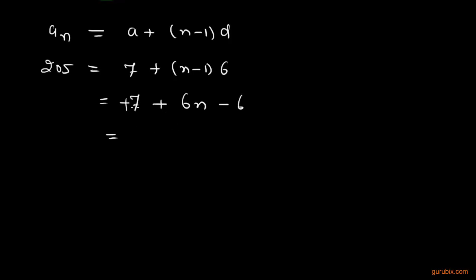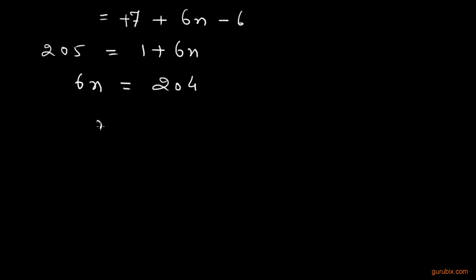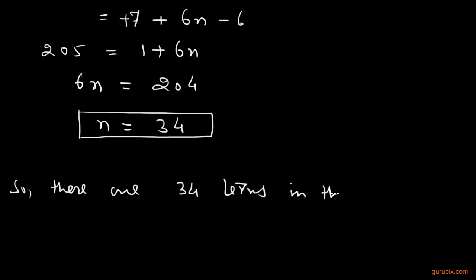Now we can calculate N easily like this: 7 plus 6N minus 6. If we subtract minus 6 from this positive 7, we get 1 plus 6N equals 205. Therefore 6N is equal to 204.